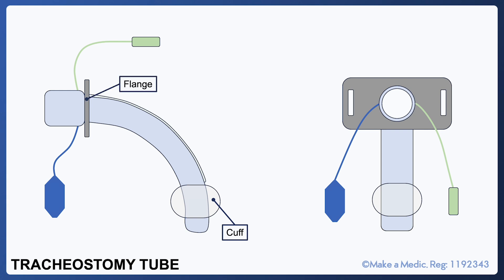The flange is the part of the tracheostomy tube which sits on the outside against the patient's neck. This will be used to suture the tube and ensure it doesn't get dislodged. The cuff is inflated via a pilot balloon which dangles from the tracheostomy tube on the outside.